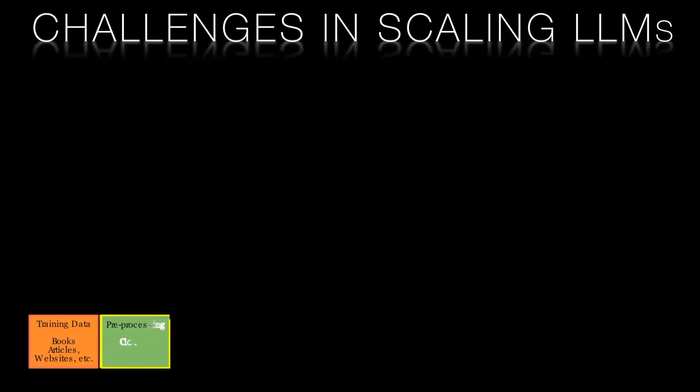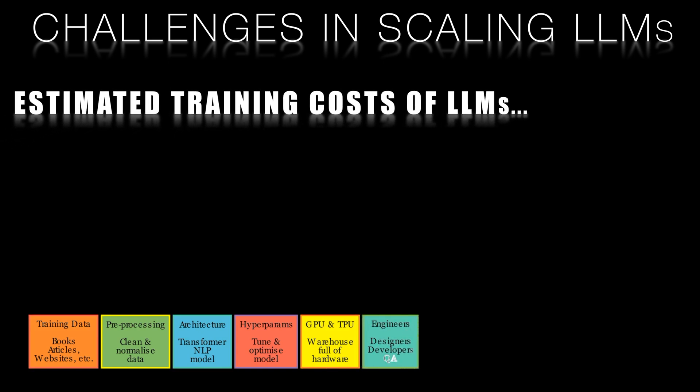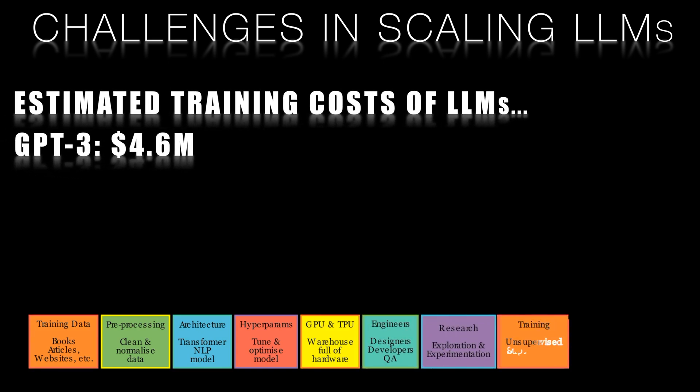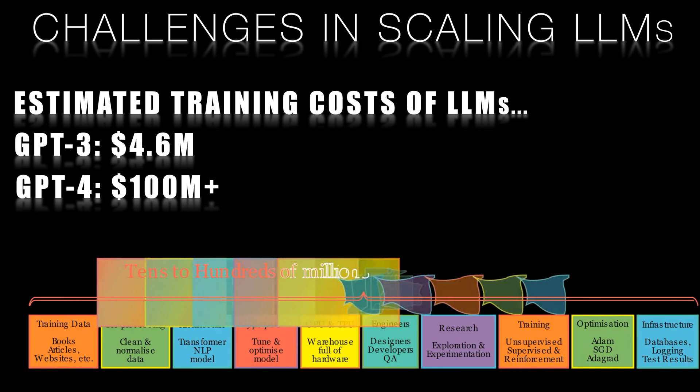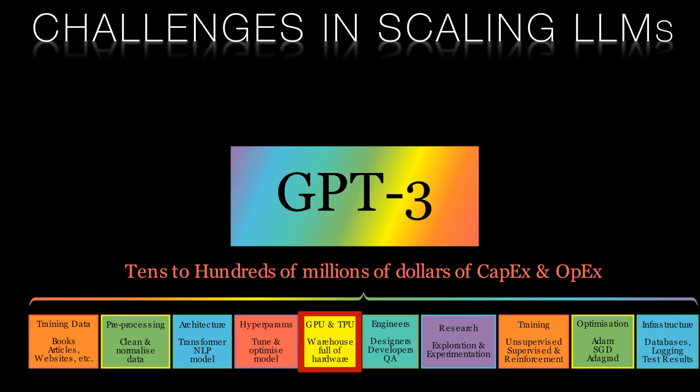Despite their impressive capabilities, LLMs like GPT-4 face significant challenges in scaling up further. The costs of training these models are immense, with GPT-3's training estimated at $4.6 million, and GPT-4's likely in the realm of $100 million. This is due to increasing demands for computing power, electricity, and skilled labor. As the complexity of these models grows, so does the need for specialized hardware and greater computational resources. This can result in high energy consumption, which not only drives up costs, but also raises concerns about environmental impact and sustainability.